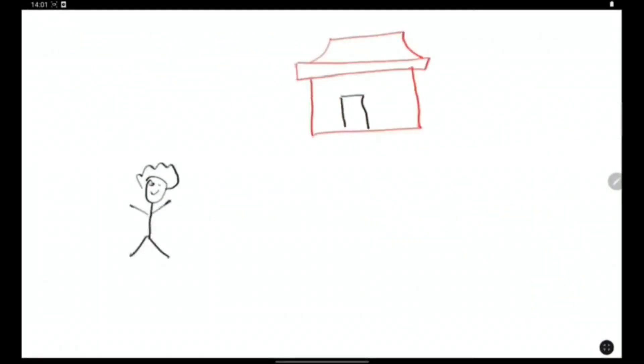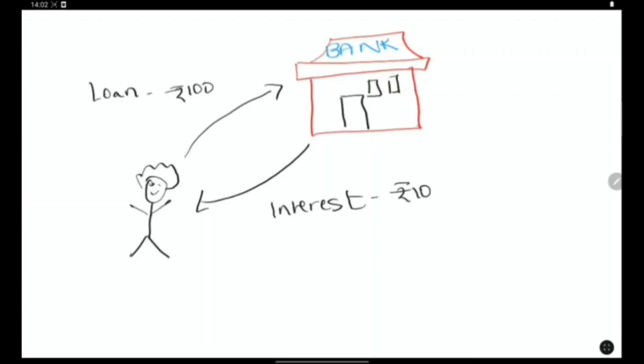Let us take an example to understand this better. Assume that you approach a bank to take a loan of rupees 100 from the bank. The interest you pay is rupees 10 charged at 10 percentage by the bank. So then logically KD should be 10 rupees interest divided by 100 loan amount which is 10 percentage. Where does the 1 minus t come from?